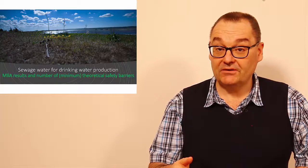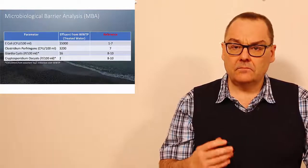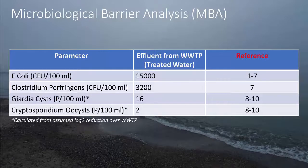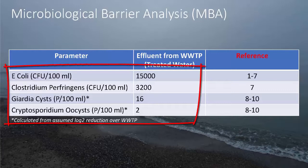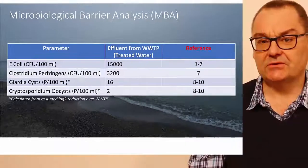Let's have a look at the quality we came up with in the last video. Based on the literature references we came up with the following values for the indicator parameters as we show here. You have E.coli, you have Clostridium perfringens, Giardia and Cryptosporidium. So this is now the assumption we make in our treated wastewater from the wastewater treatment plant.